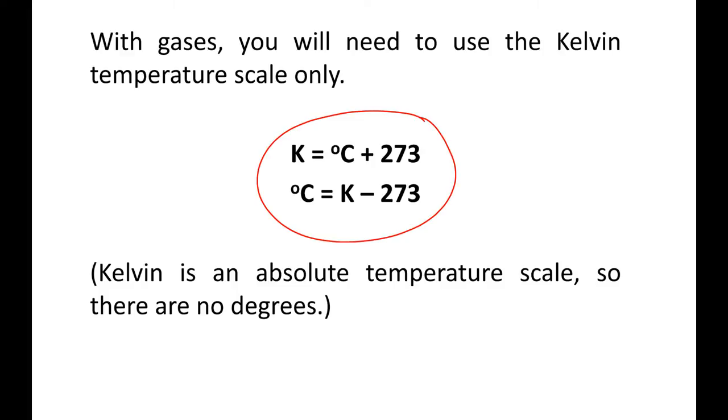Kelvin is degrees Celsius plus 273. So, let's look at zero degrees Celsius, which is the freezing point of water. To convert it to Kelvin, you would take zero plus 273, which is 273 Kelvin. So, 273 Kelvin is basically the freezing point of water.